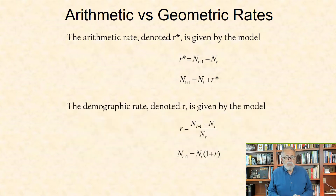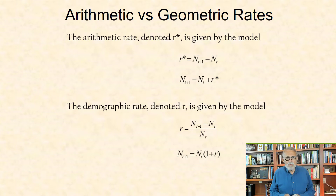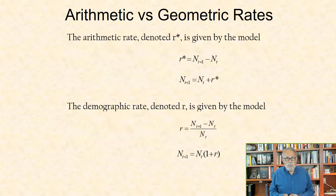The demographic rate, denoted R, is given by the model R equal the number at time t plus 1 minus the number at time t, all over the number at time t. When rearranged, this equals number at time t plus 1 equal the number at time t times 1 plus R.